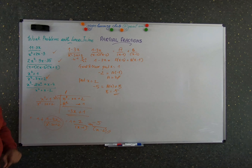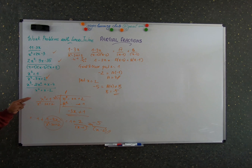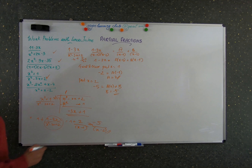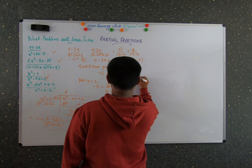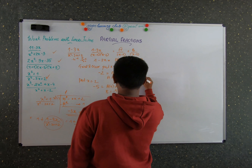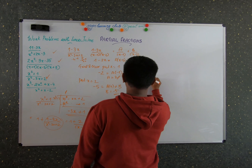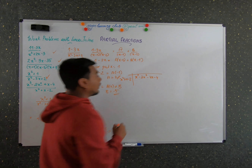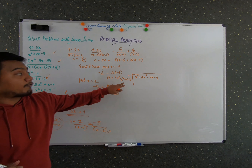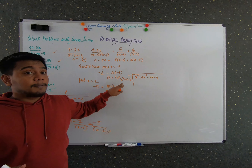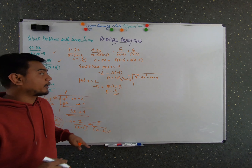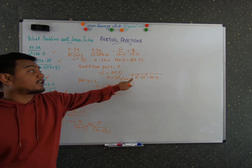Now we've covered that problem. Let's do another problem where the numerator degree is greater than the denominator. Similarly, we have to do polynomial division first to break it down. So we take the expression x cubed minus 2x squared minus 4x minus 4 in the numerator, and x squared plus x minus 2 in the denominator. Always remember it should be written in descending order of degree — the highest degree comes first.